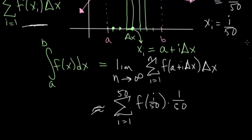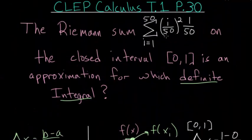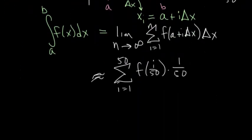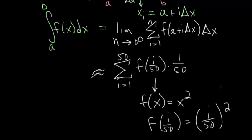And now comparing this to the Riemann sum we were given, notice that this i over 50 is squared. So what that essentially tells us is that our function is the squaring function or just x squared. Since if we plug in i over 50 into this function here, it'll come out as (i over 50) squared. So what this all tells us is that our Riemann sum essentially approximates the definite integral from 0 to 1 of x squared dx.